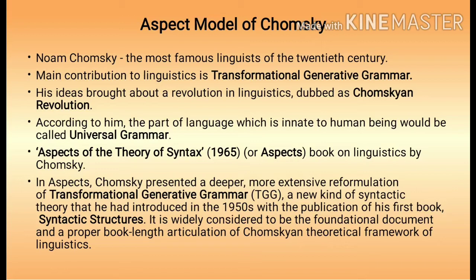Aspects of the Theory of Syntax is a book on linguistics written by Noam Chomsky in the year 1965. In Aspects, Chomsky presented a deeper, more extensive reformulation of Transformational Generative Grammar — a new kind of syntactic theory that he had introduced in the 1950s with the publication of his first book, Syntactic Structures. It is widely considered to be the foundational document and a proper book-length articulation of Chomsky's theoretical framework of linguistics.